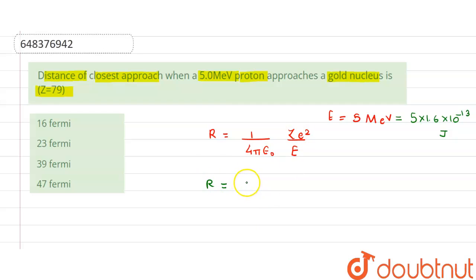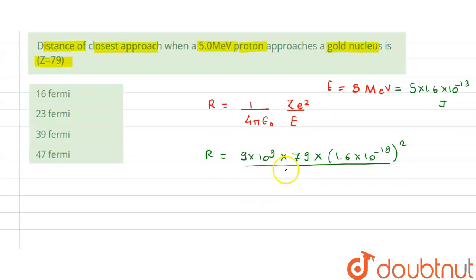So if we substitute these values, 1/(4πε₀) is nothing but 9 × 10⁹ × Z is 79 × charge on proton is 1.6 × 10⁻¹⁹ square upon 5 × 1.6 × 10⁻¹³.